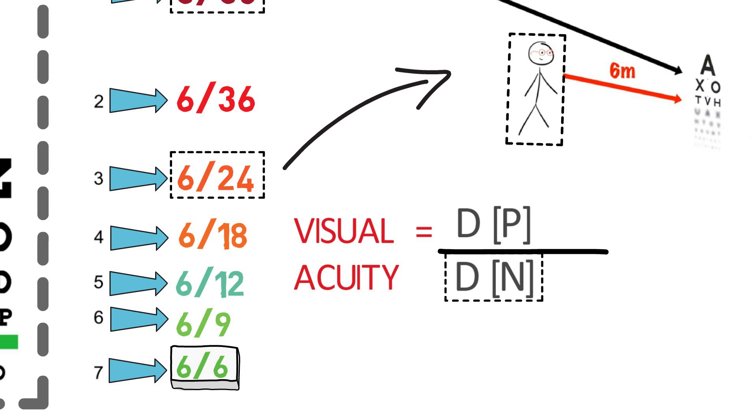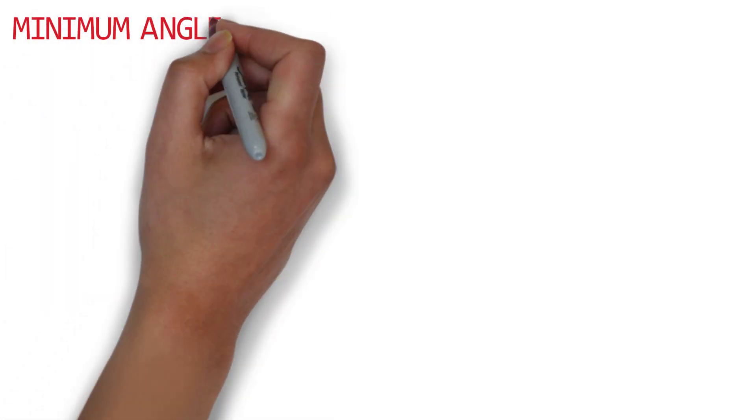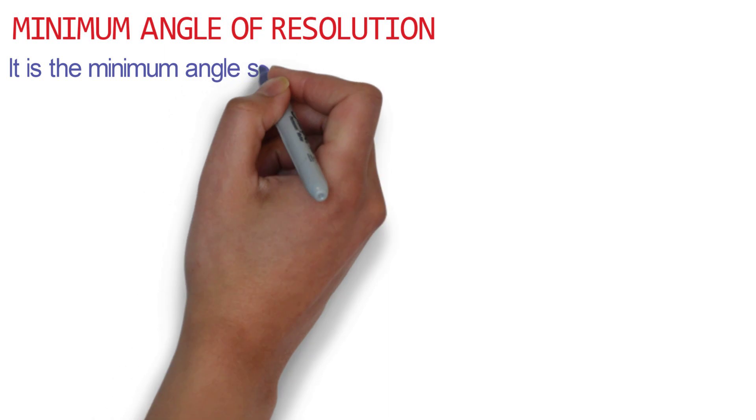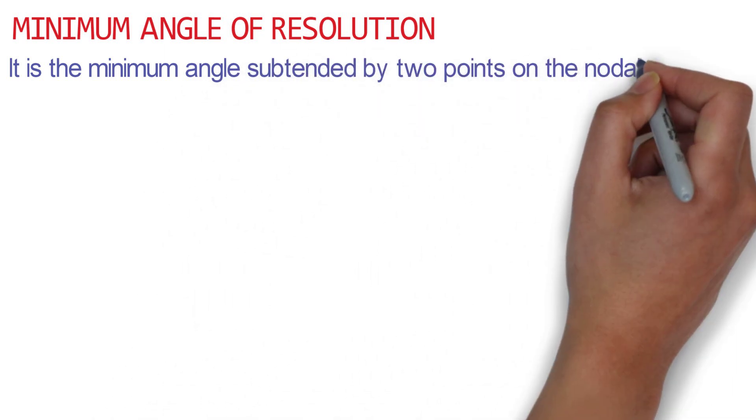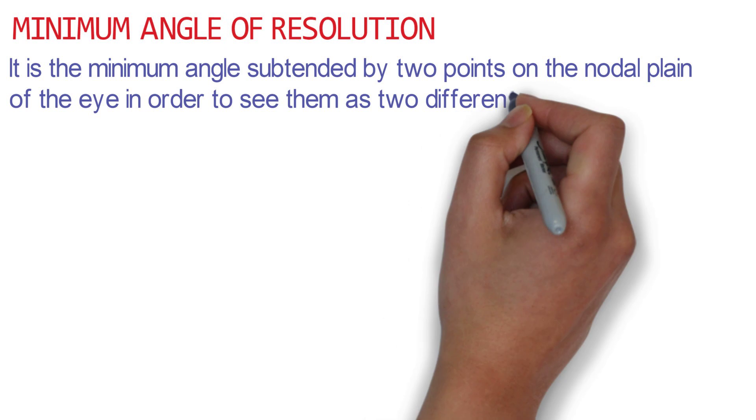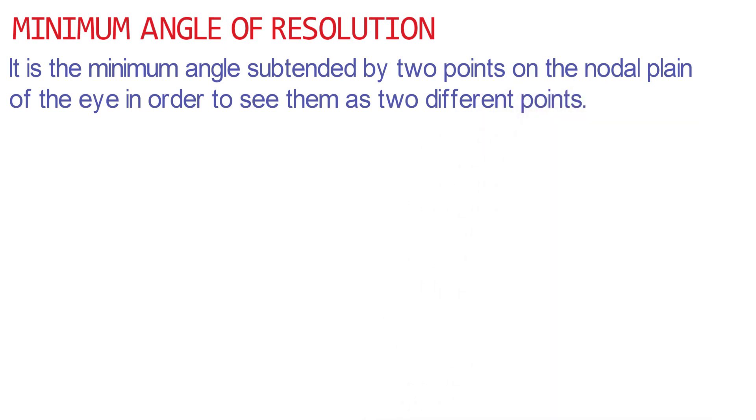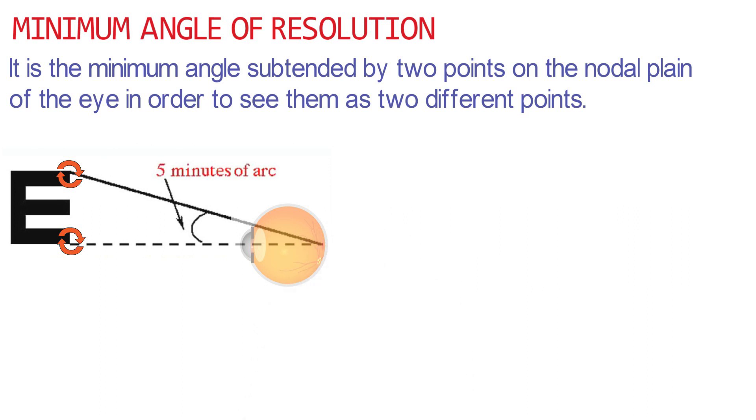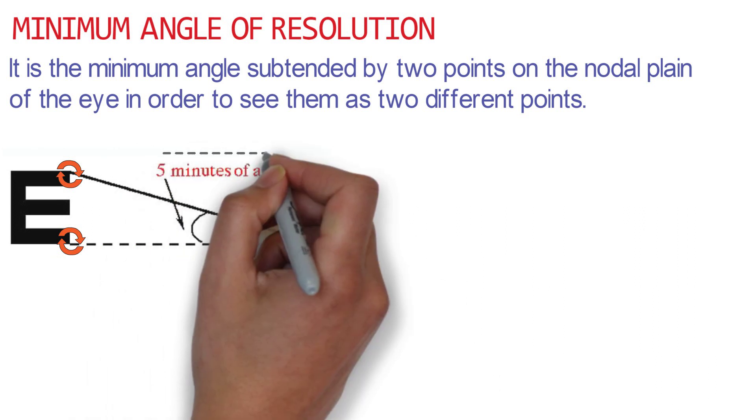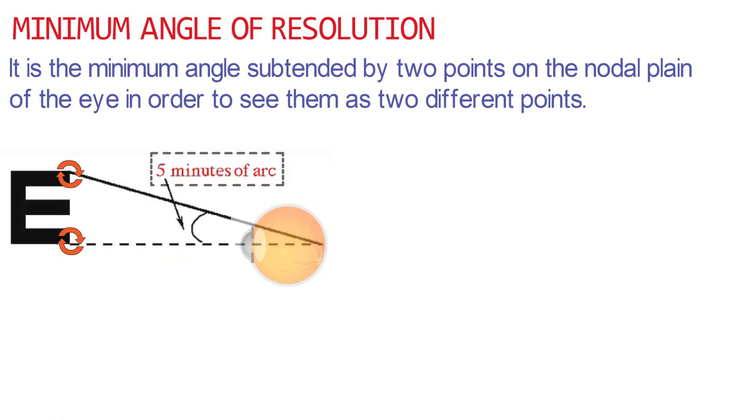It is the minimum angle subtended by two points on the nodal plane of the eye in order to see them as two different points. Therefore, in order to identify this letter as E, these two points must be seen as two separate points. And for this, the two points must extend an angle of 5 minutes of an arc at the nodal point of the eye. This angle is known as minimum angle of resolution MAR.